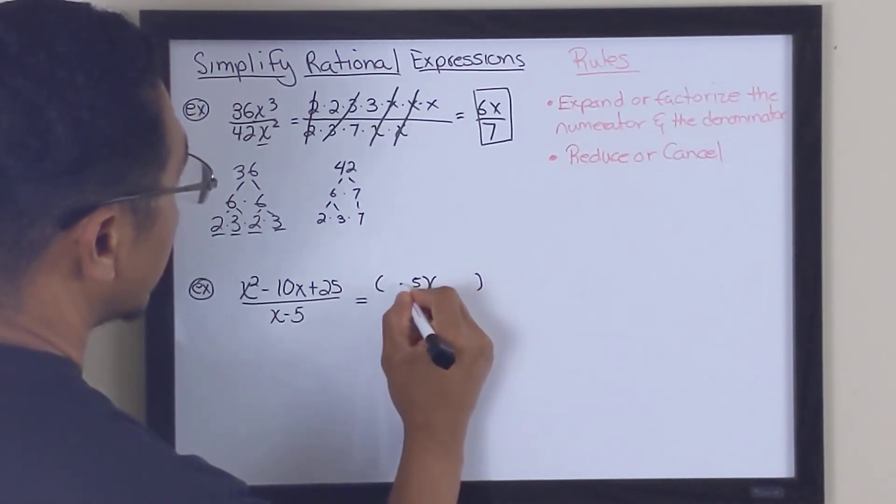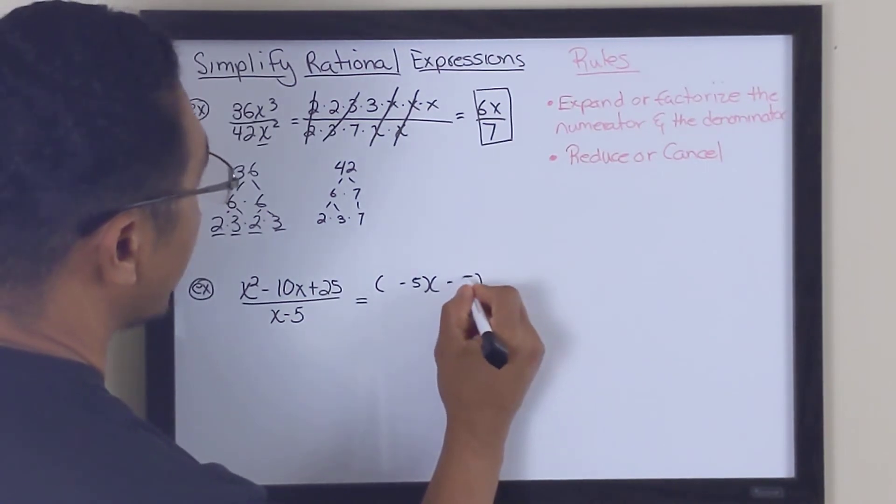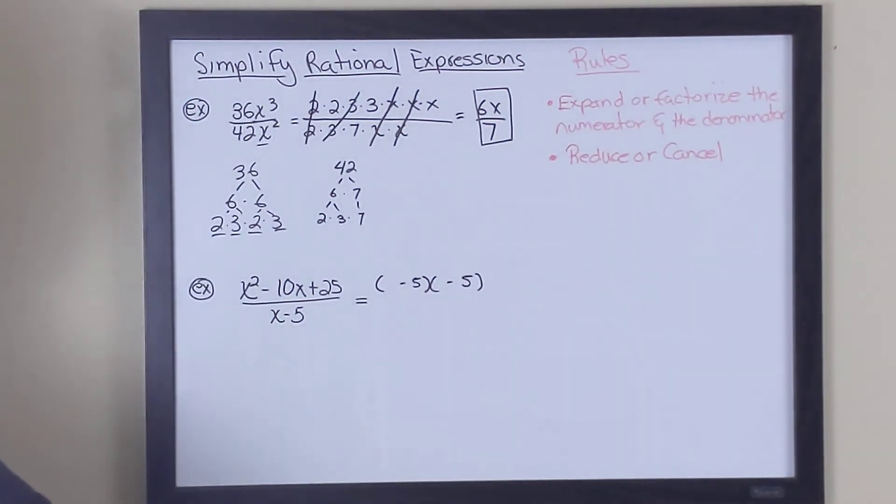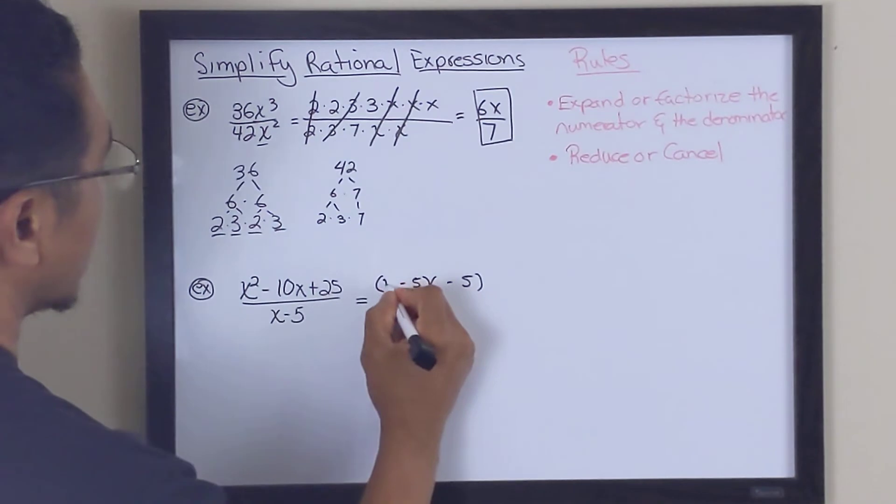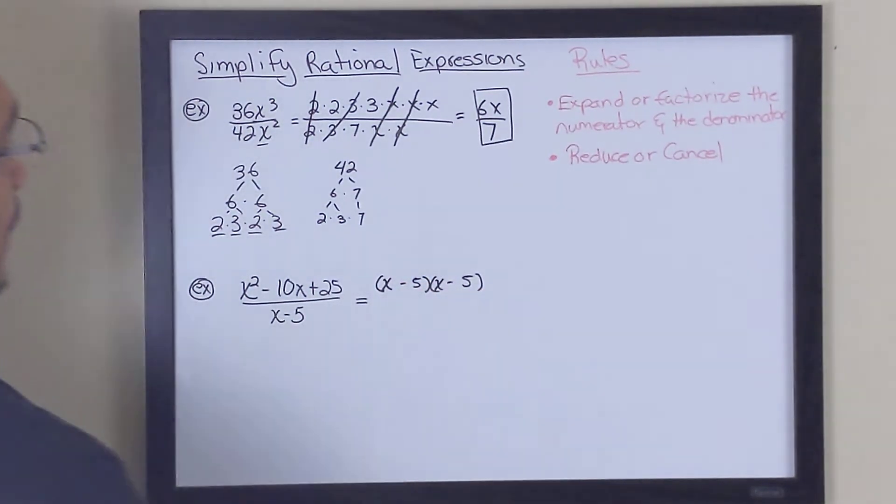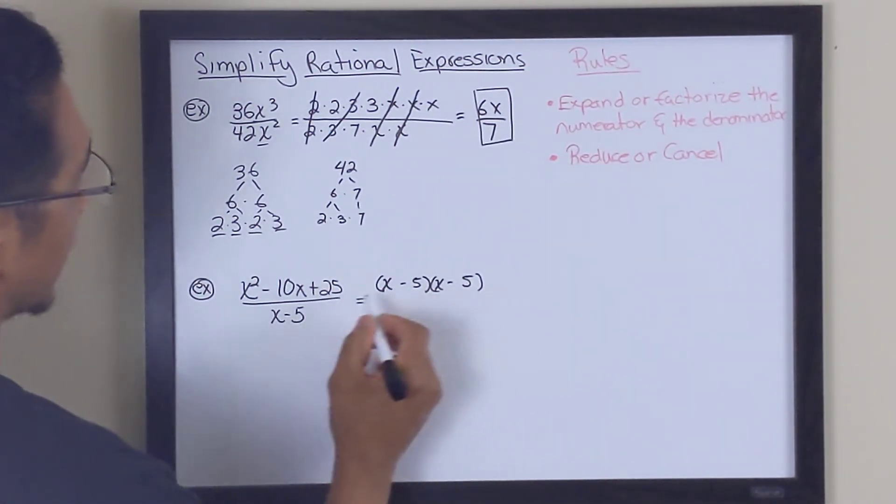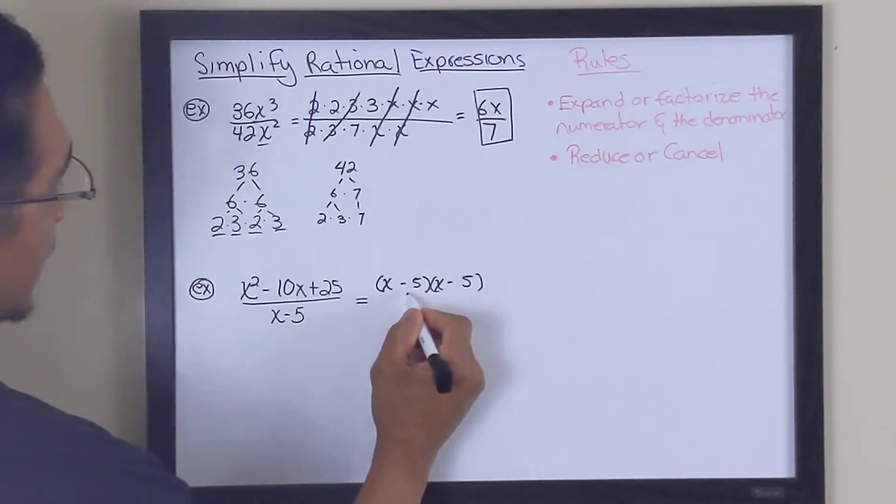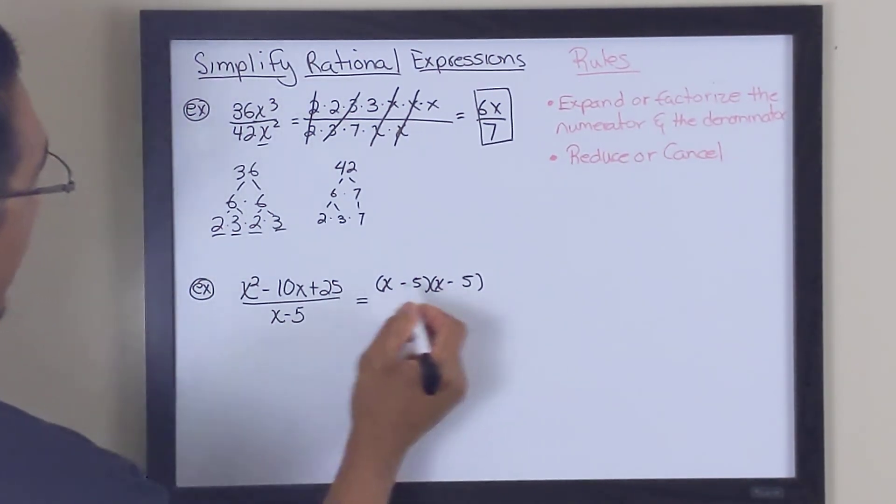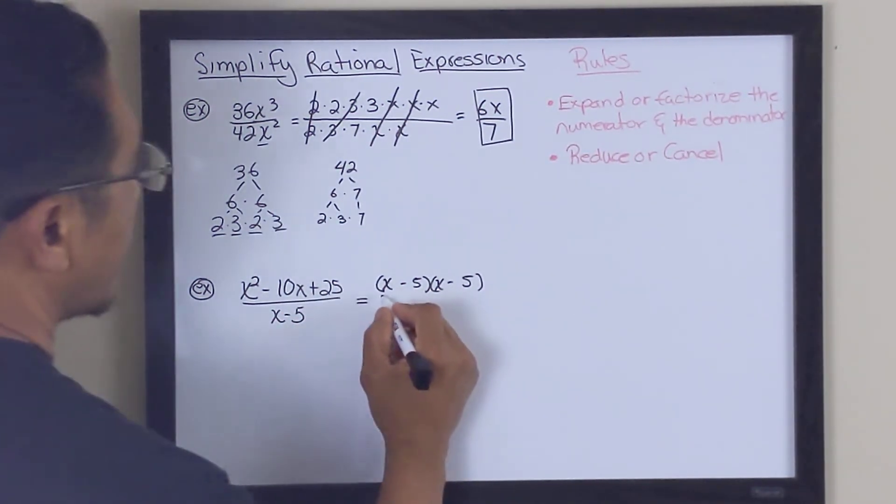So our answer is going to be a negative 5 and a negative 5. And of course, this is x squared, so we're going to place our x's here. Alright? That is another video of actually factoring that we're not going to look at into this particular lesson. But if you look at this, negative 5 times negative 5 gives us a positive 25. And negative 5 plus a negative 5 adds to negative 10. So now, this is factored.